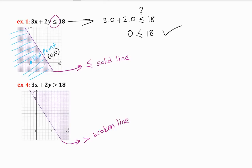In this example, we shaded the right area because when I put my test point (0,0) here, it doesn't satisfy my equation.